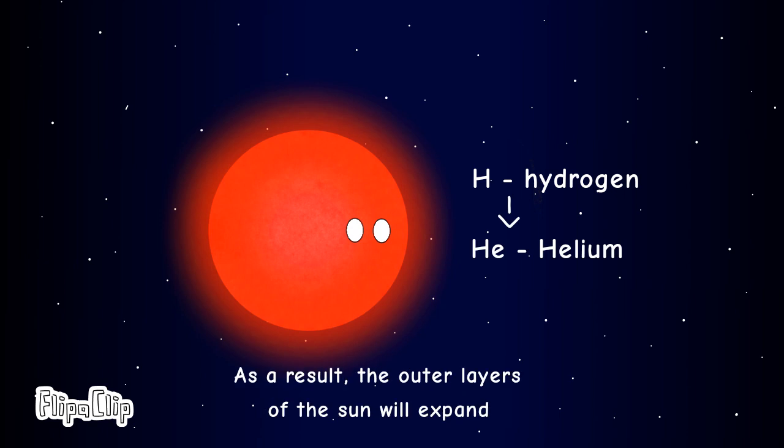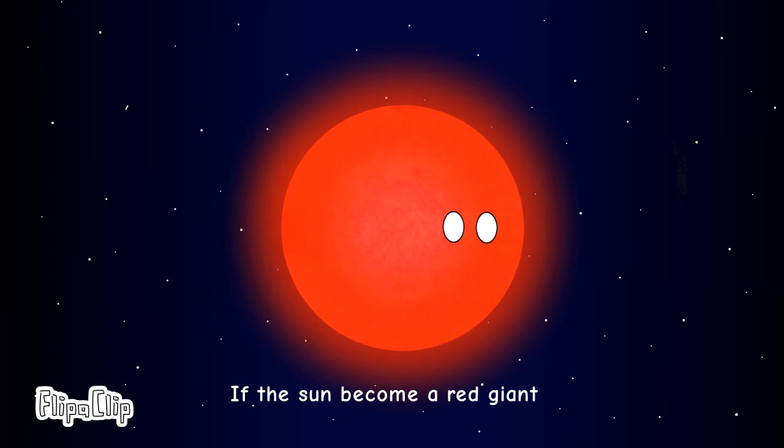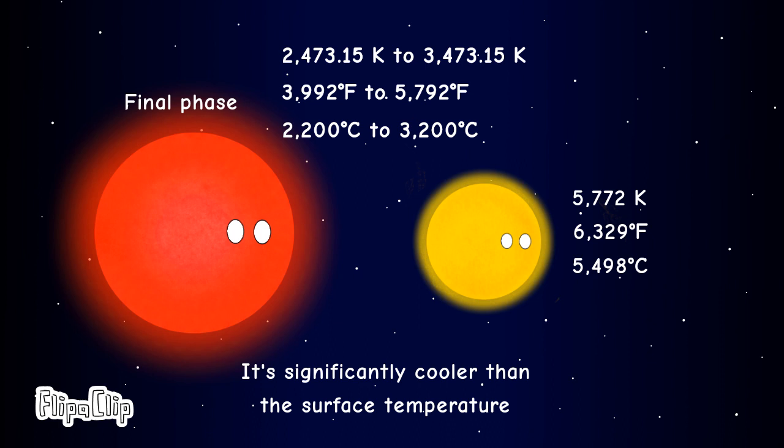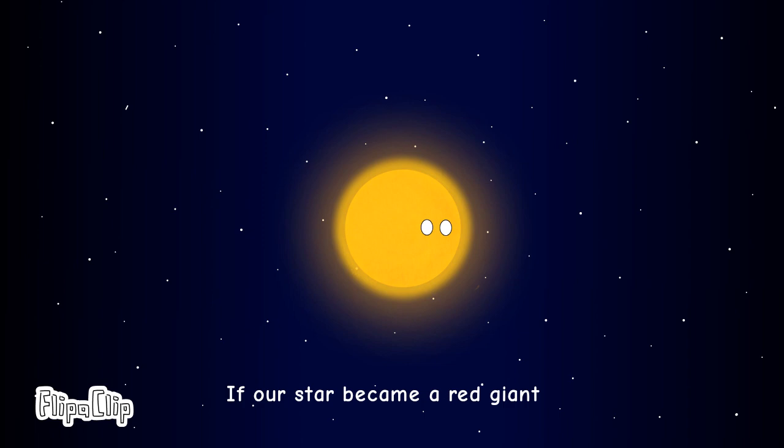If the sun becomes a red giant, the temperature is around 2,200 degrees Celsius to 3,200 degrees Celsius. It's significantly cooler than the surface temperature of the current sun. And finally, if our star became a red giant...